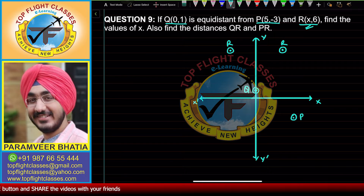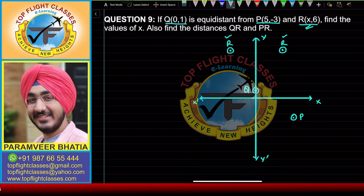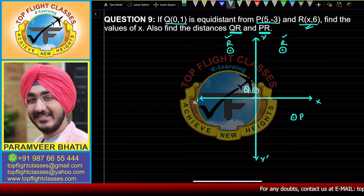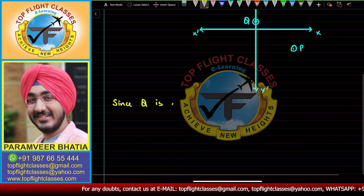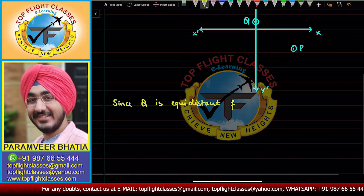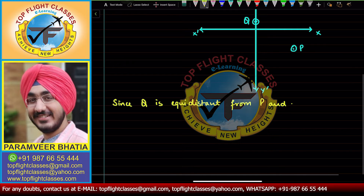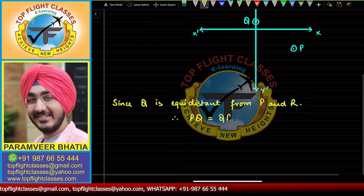We have to find this value of x — it could be here or here, two possible places. We also need to find the distances between Q and P. Since Q is equidistant from the two points P and R, we can write that PQ is equal to QR.